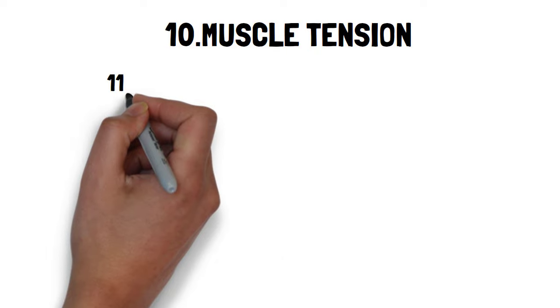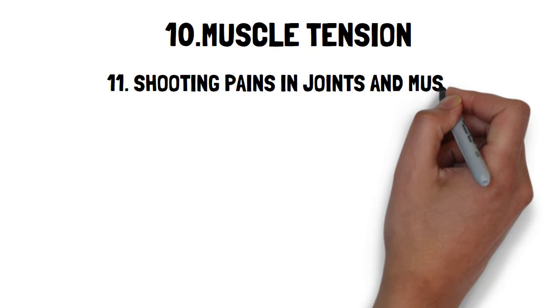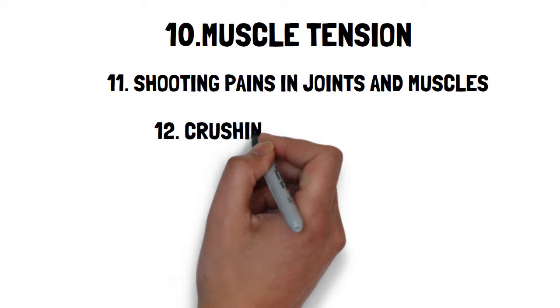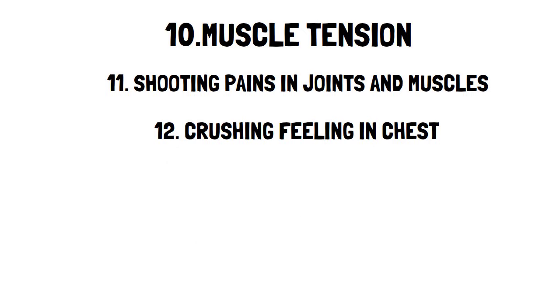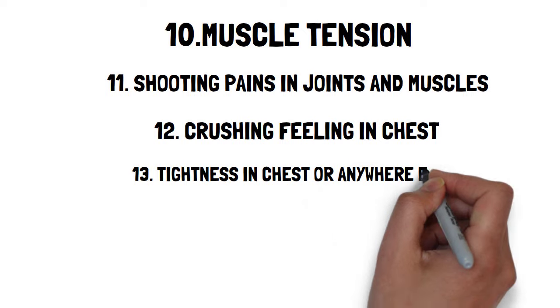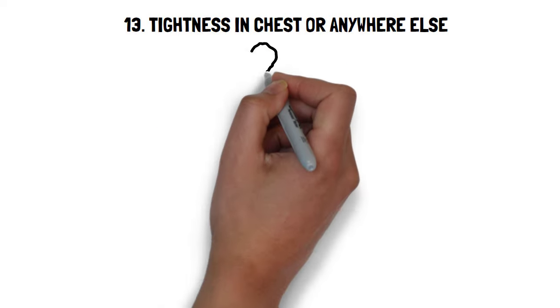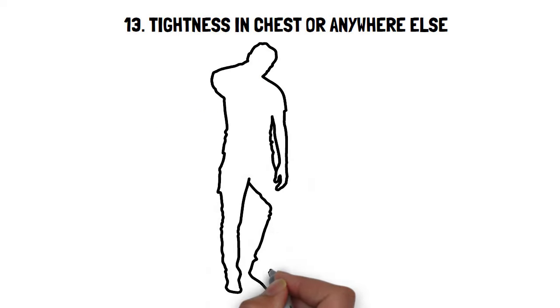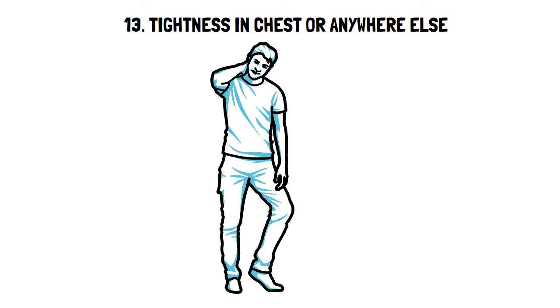Ten, muscle tension. Eleven, shooting pains in joints, muscles and any other area of your body. Twelve, crushing feeling in the chest. Thirteen, tightness in chest or also in arm or anywhere else. Kind of like something is pulling on your skin or like there is too little skin on one of your extremities causing it to fit too tightly.